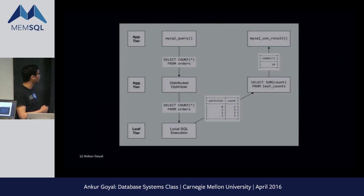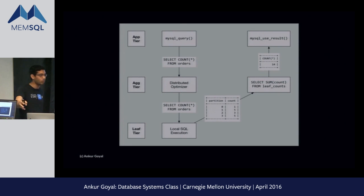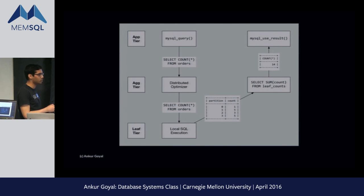Here's the implementation of a very simple query: SELECT COUNT(*). MemSQL is MySQL compatible over the wire, so you use the MySQL client library or any tool that supports MySQL to send queries. You send SELECT COUNT(*) to the aggregator. The aggregator asks what it needs from the leaves — SELECT COUNT(*) over their slices of data. Each leaf locally executes SELECT COUNT(*), and the union of those results includes a partition and a count. The aggregator generates a SQL-like plan: SELECT SUM(count) FROM these leaf counts, and sends the final result back to the client.